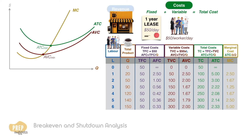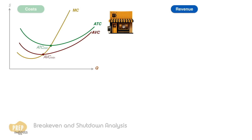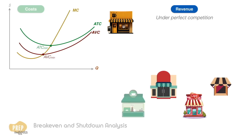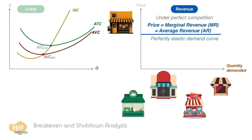Now let's shift our attention from costs to revenue. Revenue is simply price times the quantity sold. In order to understand price, we need to understand the kind of competitive market the firm operates in. For a firm operating in a perfectly competitive market, it is a price taker and therefore has a perfectly elastic demand curve. The marginal revenue is equal to the average revenue, which is equal to the market price.